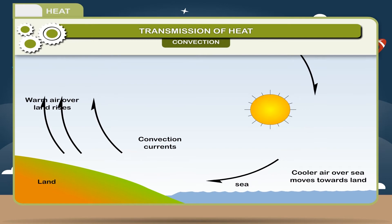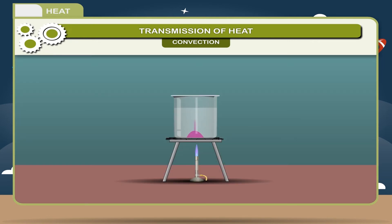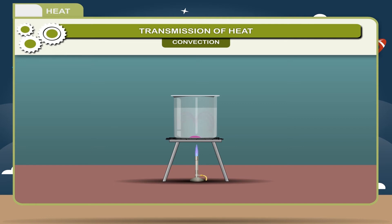Activity: take a beaker three-fourths filled with water. Put some crystals of red potassium permanganate in it. Now heat the beaker from the bottom. You will notice that the red particles will start rising and falling. This happens because water immediately above the heat source becomes lighter and rises up, while cool particles being heavier come down. The process continues till the temperature becomes uniform throughout the water. This is called convection.